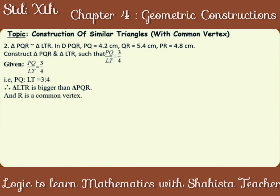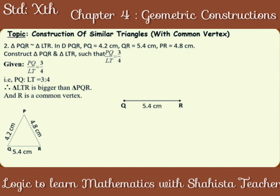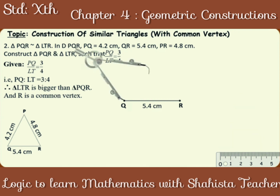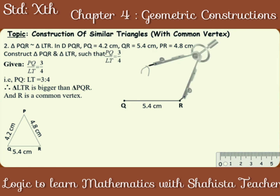Construction. Draw a rough figure of triangle PQR and mark PQ is equal to 4.2 cm, QR is equal to 5.4 cm and PR is equal to 4.8 cm. Construct triangle PQR. Draw a segment QR of measurement 5.4 cm. On the compass, take measurement 4.2 cm, keep the pointer at Q and construct an arc. Similarly, take a measurement of 4.8 cm and construct an arc from point R. Name the intersection point as P.